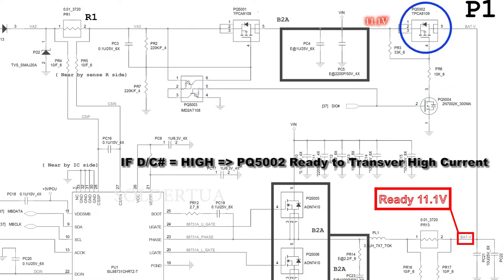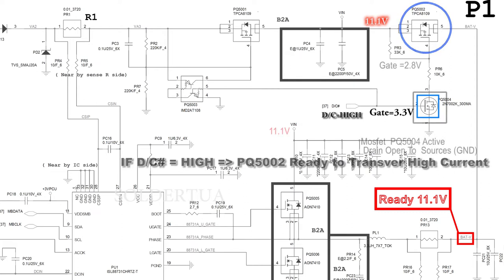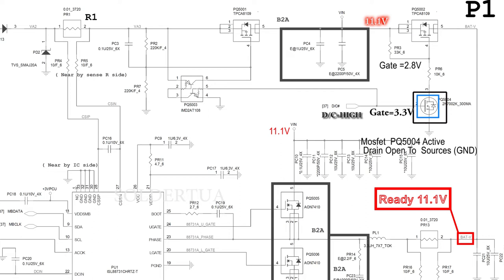This is the important point where PQ5002 will become fully active and ready to pass a large current up to its maximum amperage limit. When the D/C# signal changes from low to high, PQ5004 becomes active because the gate pin receives 3.3 volts from the EC controller or KBC. When PQ5004 becomes active, the drain and source pins open and short-circuit to ground. This changes the gate voltage of MOSFET PQ5002 from 11.1 volts down to 2.8 volts. Since the gate voltage is now less than the source voltage, PQ5002 becomes fully active or open.